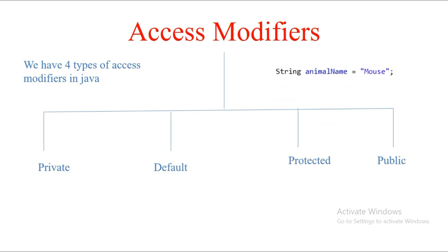Here is a code snippet showing an example of a default access modifier being used. The default modifier does not need a keyword before declaring a particular variable. So if you want to make this particular animal name private, you just use 'private String animalName = mouse'. This is how you use access modifiers.